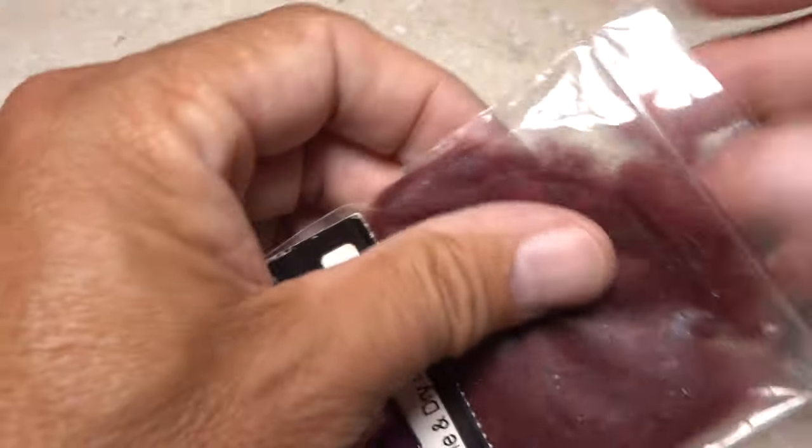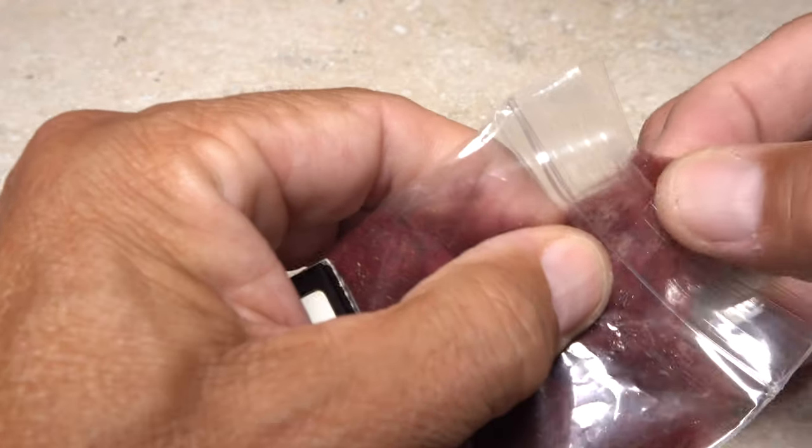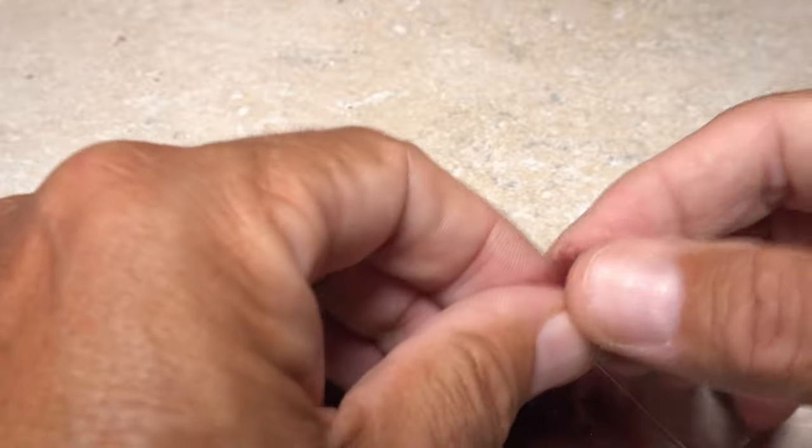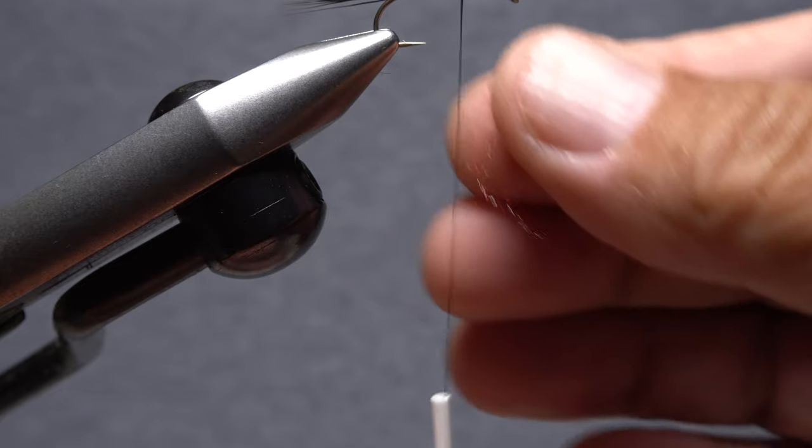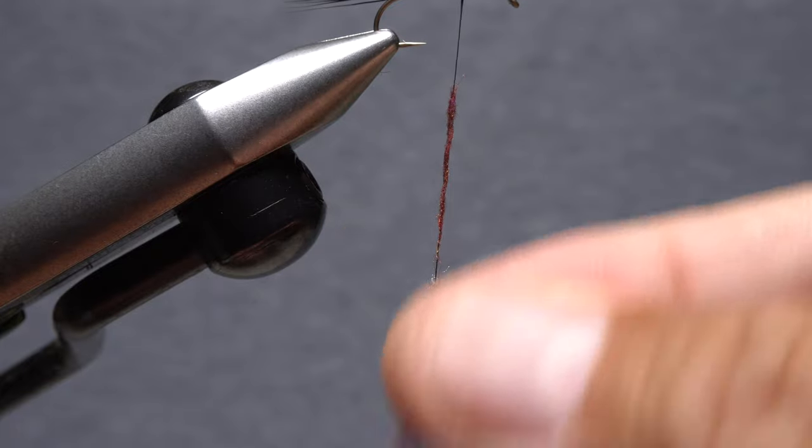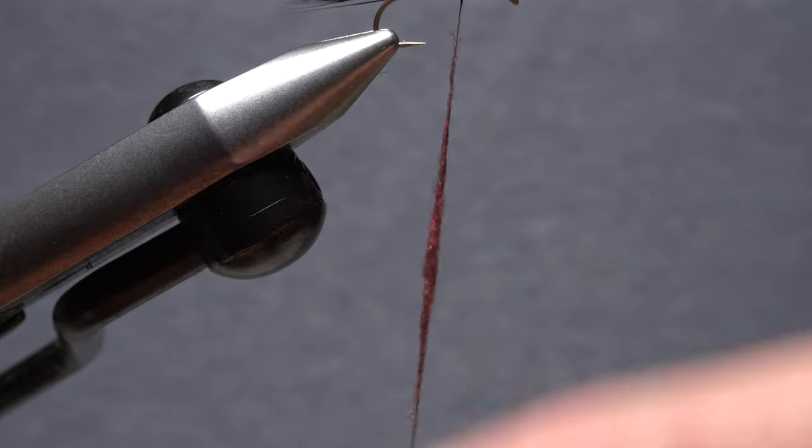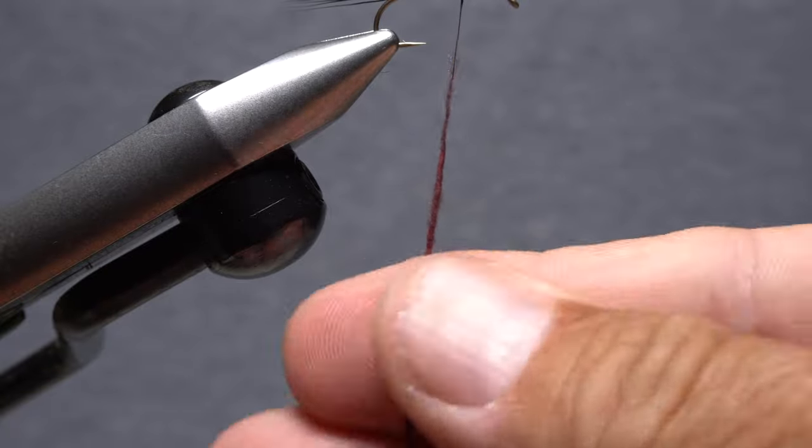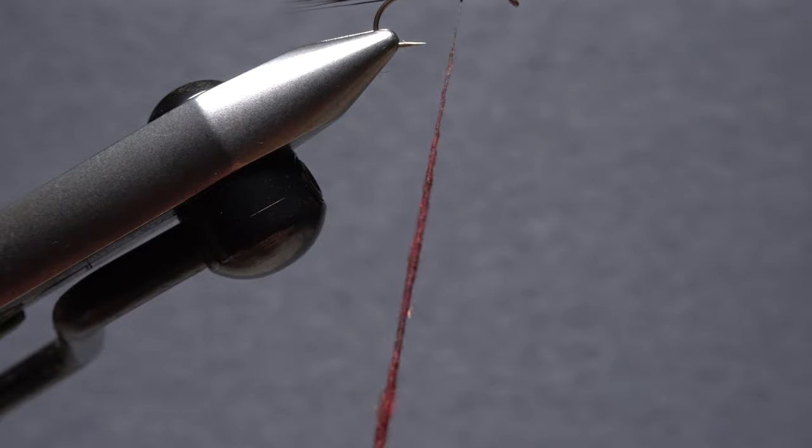Fine and dry Isonychia colored dubbing is used to form the body of the fly. I prefer the UV stuff to the regular because it has a little more shimmer. Pull a small clump free from the packet and use it to create a slender 2 inch long noodle on your tying thread. Do your best to keep the noodle nice and thin.